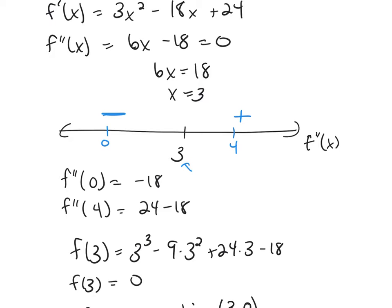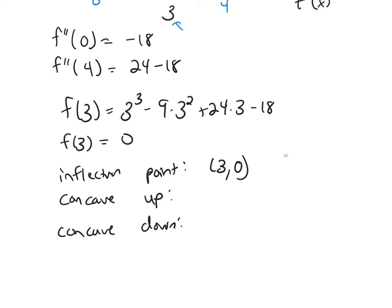Concave up when it's positive, and you're concave down where it's negative. So here, it's concave up from 3 to infinity. It's concave down from negative infinity to 3.